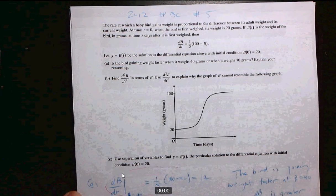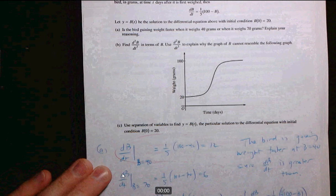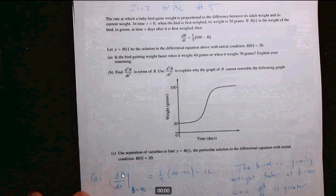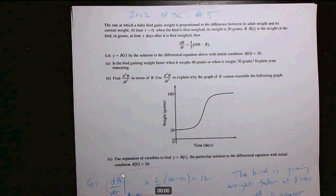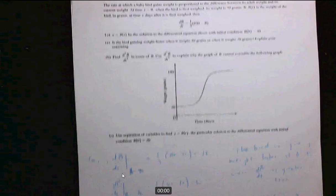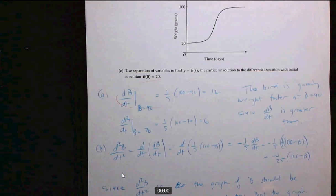But there are a couple of things I wanted to go through. So this is a pretty standard differential equation you see on the AP exam. The first question is about whether the bird whose weight is represented by this differential equation is gaining weight faster when it's 40 grams or when it's 70 grams. Most of you handled this well. Just a couple of points here.